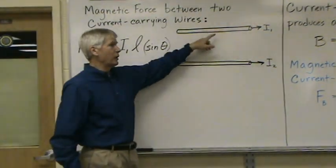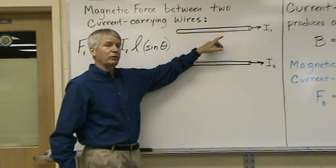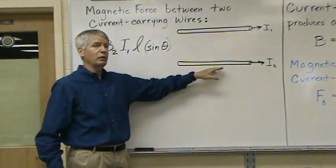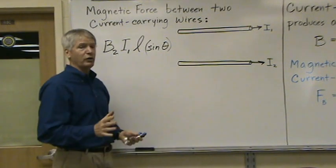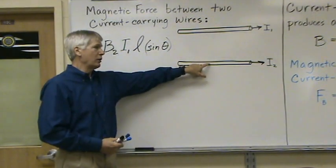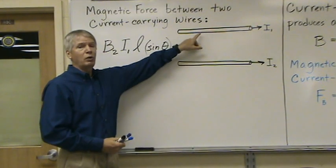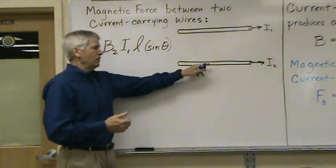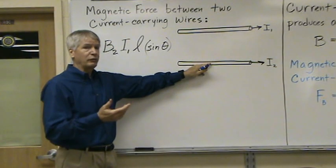We've got wire 1 with current I1 going through it and wire 2 with current I2 going through it. So what we're going to do first of all is determine the force that this wire will apply to wire 1. Current carrying wire produces a magnetic field.